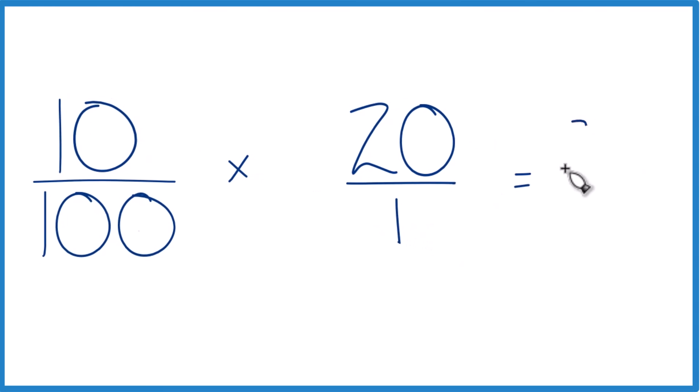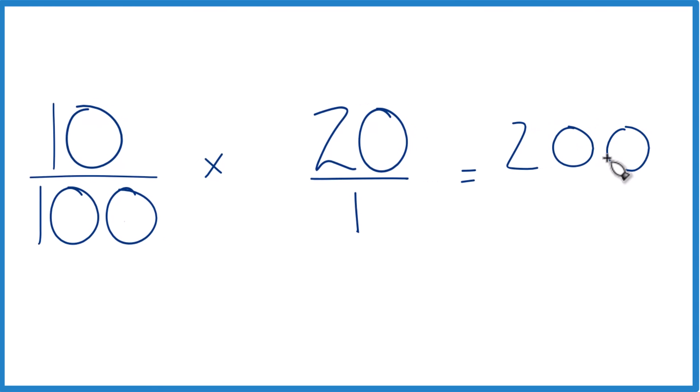10 times 20, that's 200, and then 100 times 1 is 100. And you can see that 200 over 100, that just equals 2. So that's another way to do it, maybe even a little easier.